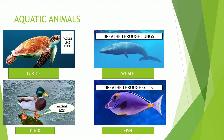Now first we shall study about aquatic animals. Animals which live in water are called aquatic animals, such as fish, turtle, crab, duck, octopus, whale, etc. They have special body parts which help them to live in water. Fish and crab have gills; whales and dolphins have lungs to breathe; turtles have paddle-like feet and ducks have webbed feet to swim easily in water.